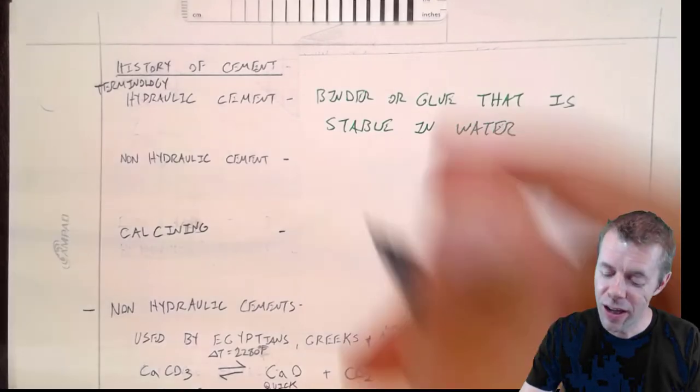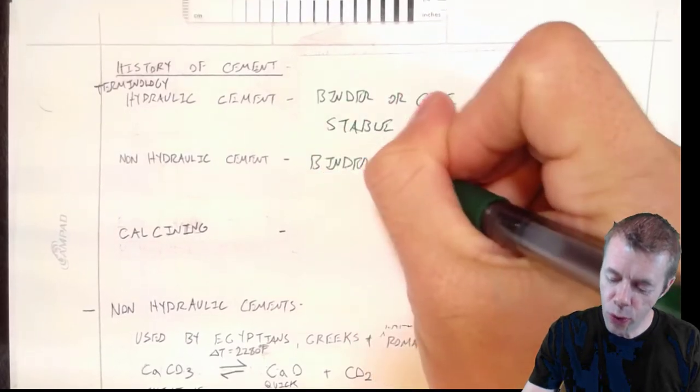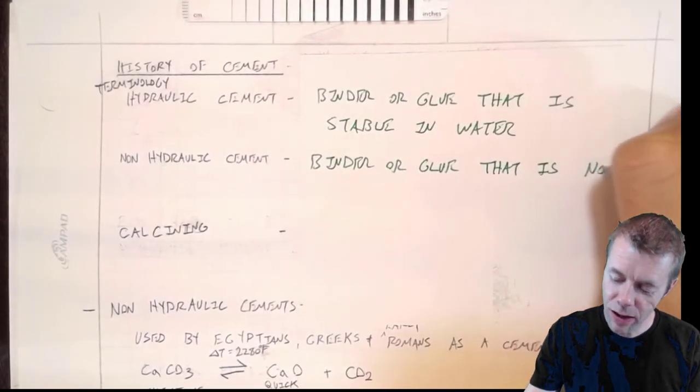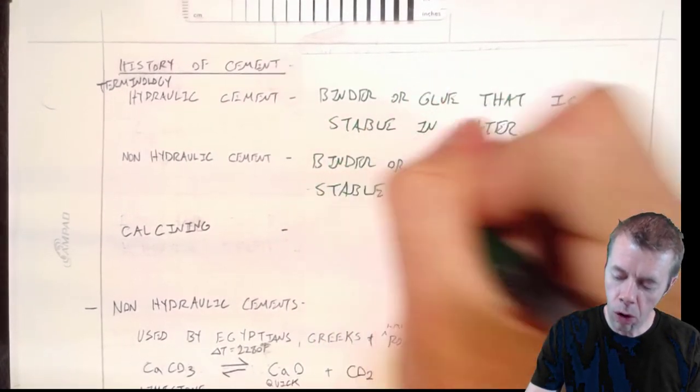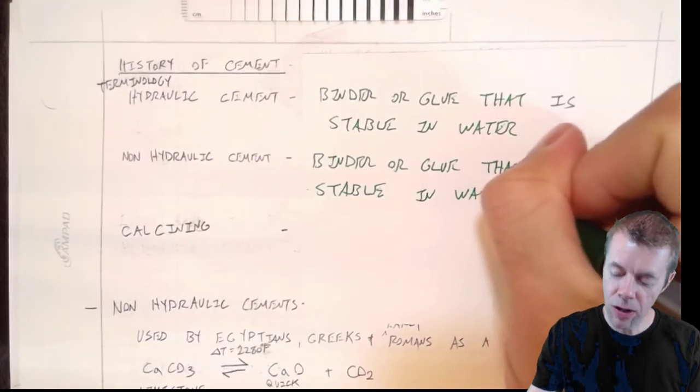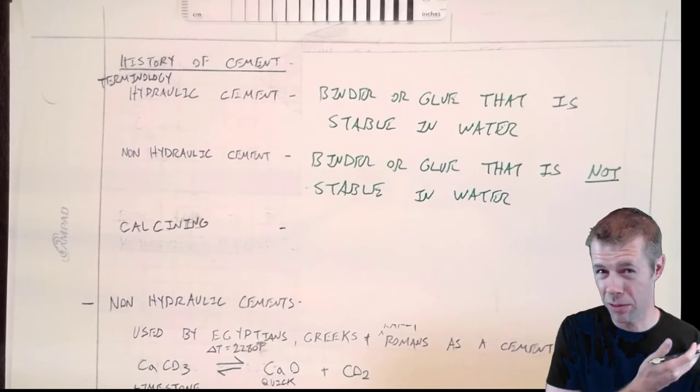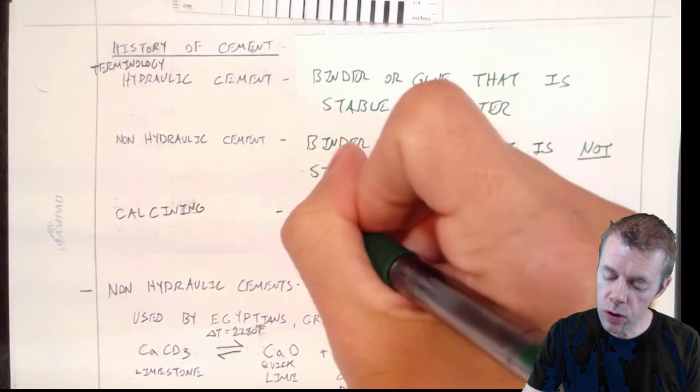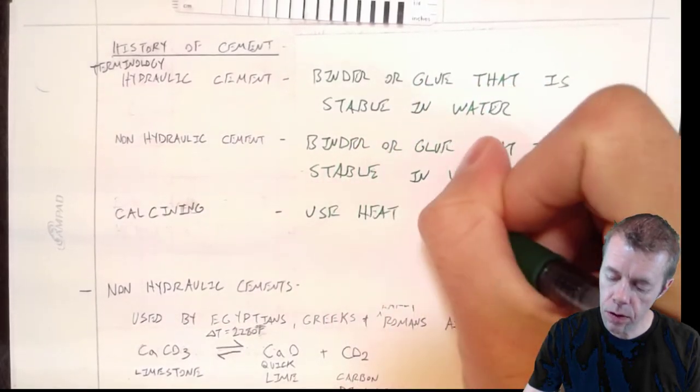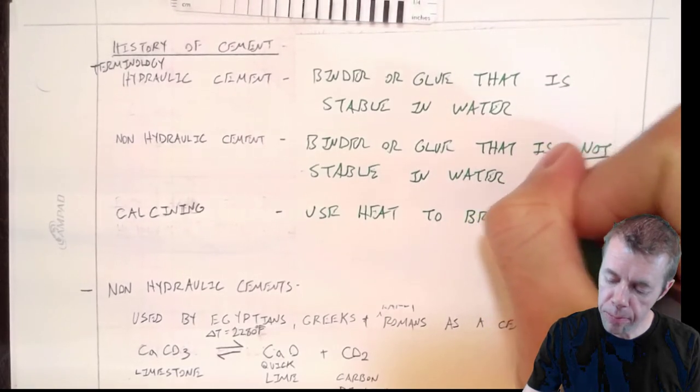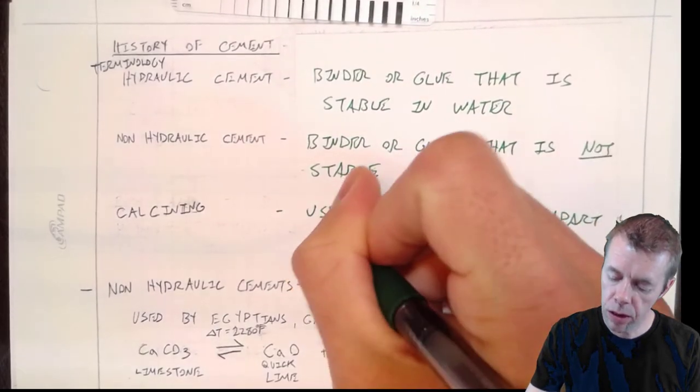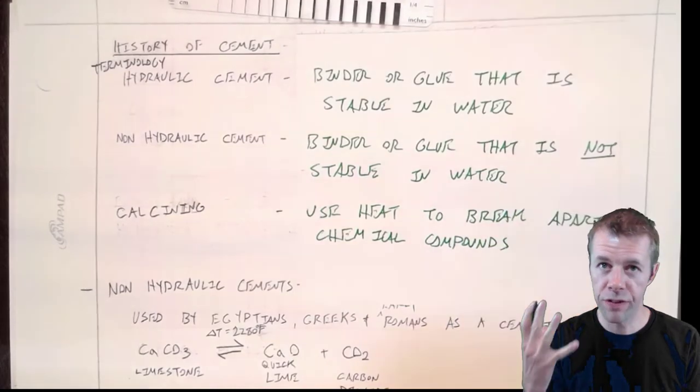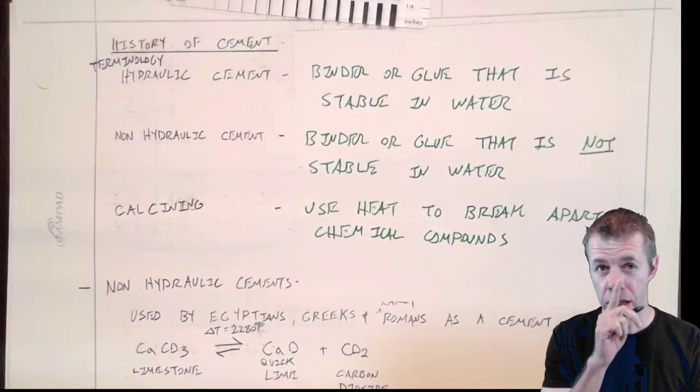You got it. It's a binder or glue that is not stable in water. That's the one that's not as valuable. That's one that if you build your house out of and it rained, your house is going to be falling down. That's not good. And this is a term called calcining. Calcining is to use heat to break apart chemical compounds. And there's a very classic version of calcining I'm going to talk about in just a second.